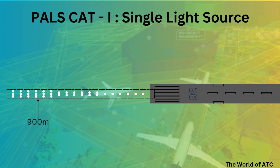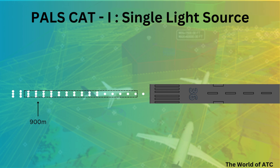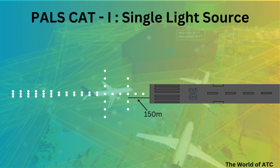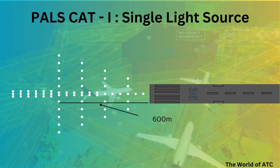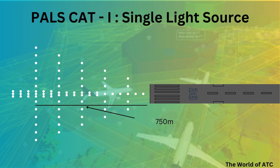With this length of 900 meters, there are five crossbars provided to the single light source precision approach Cat 1 lighting system. The first crossbar is provided at 150 meters from the runway threshold. The second crossbar shall be provided at 300 meters from the runway threshold — a distance of 150 meters from the first crossbar. The third crossbar shall be provided at 450 meters from the runway threshold. Again, the distance between the crossbars is 150 meters. The fourth crossbar shall be provided at 600 meters, and the fifth crossbar shall be provided at 750 meters from the runway threshold.